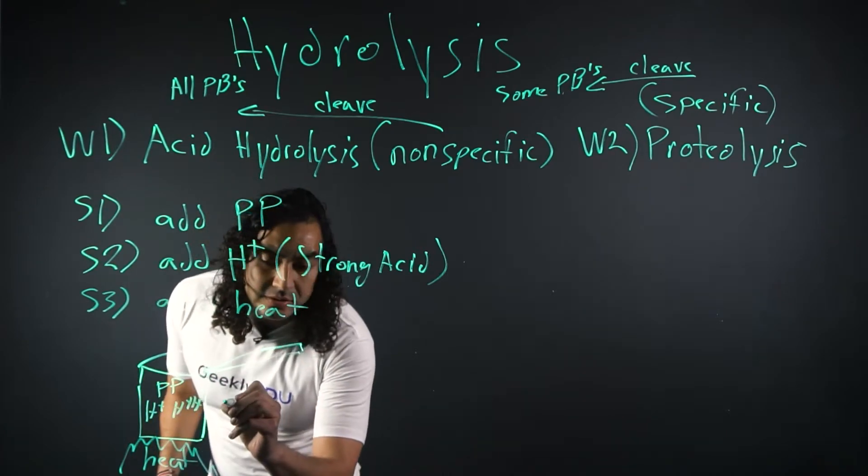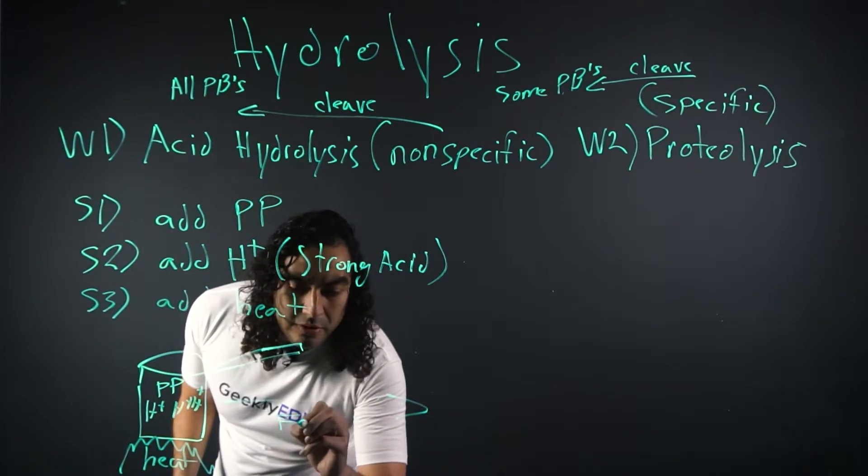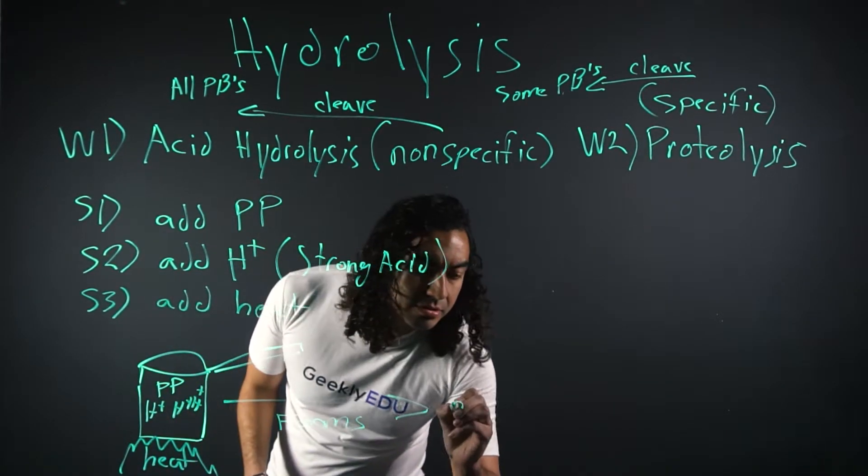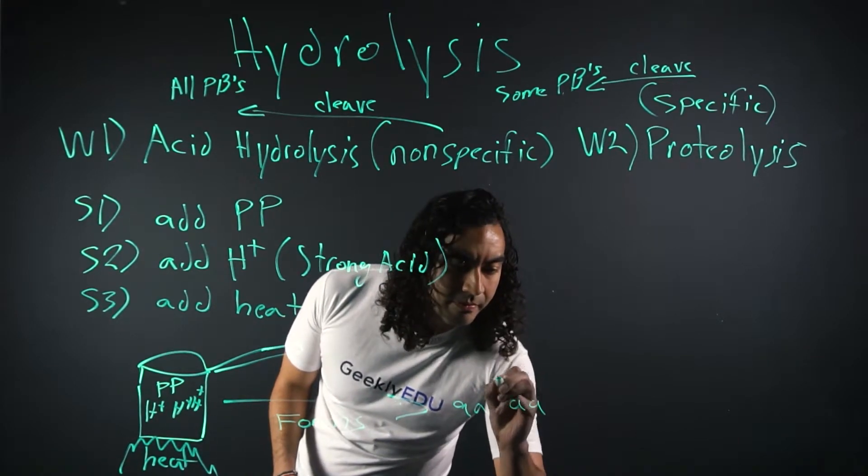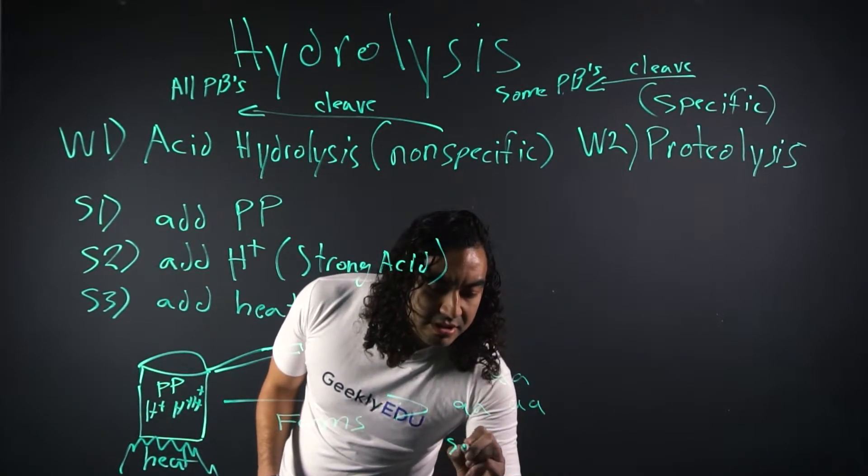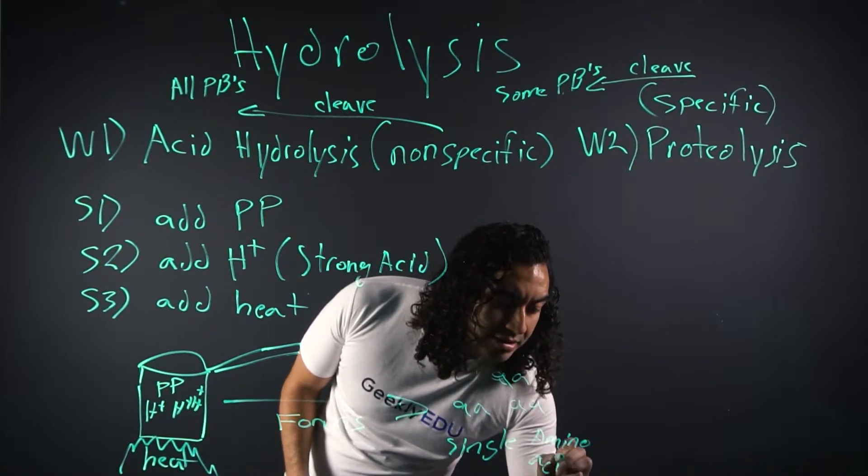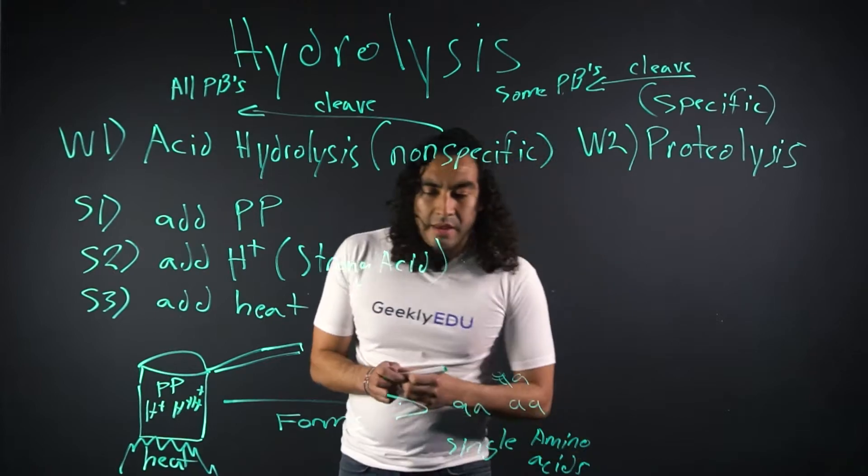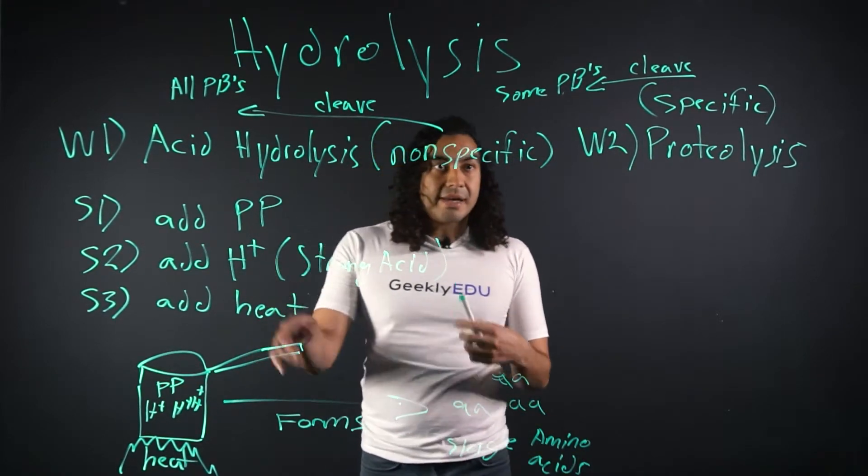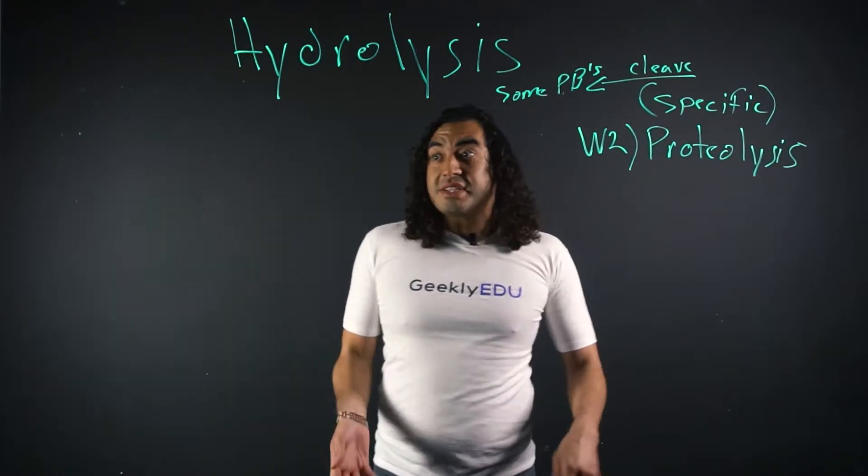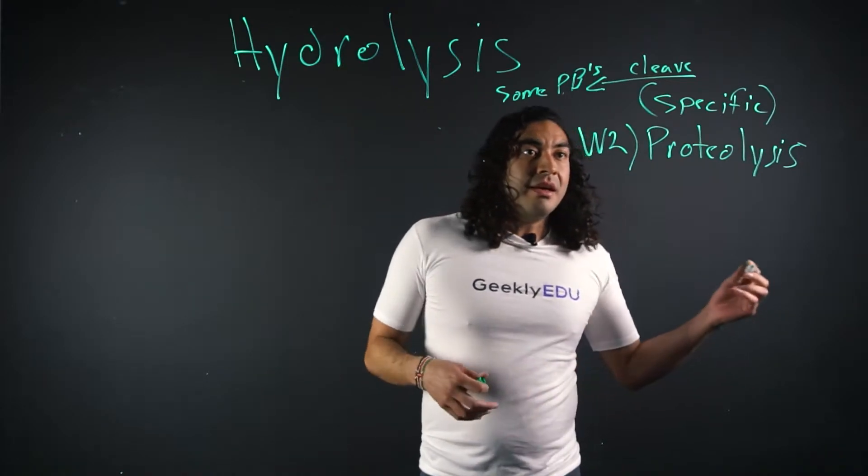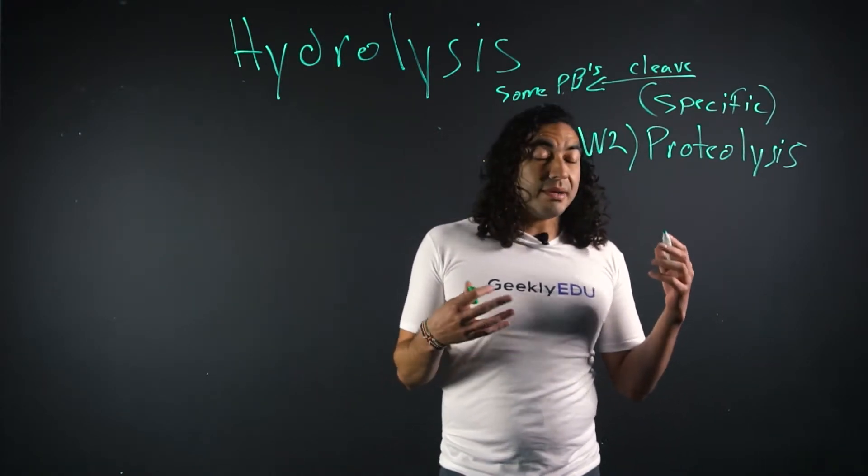And what's going to happen there is we're going to form just single amino acids. And that's how we do acid hydrolysis. So I explained the steps already of acid hydrolysis. Now I'm going to explain proteolysis.